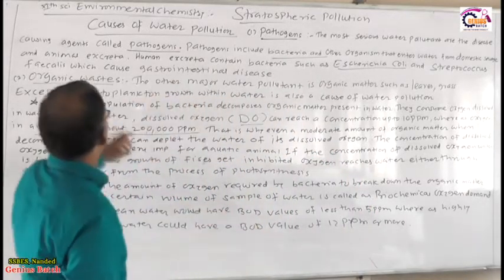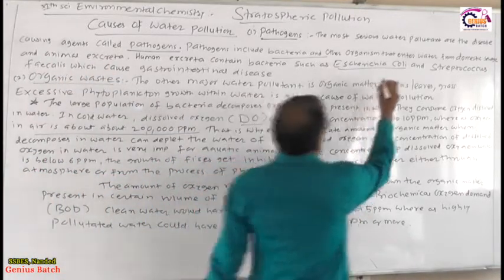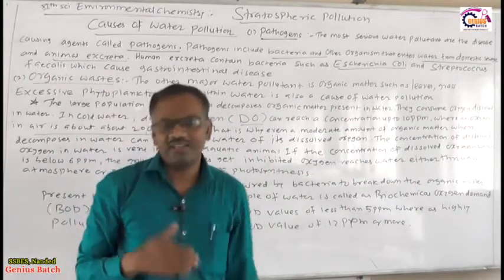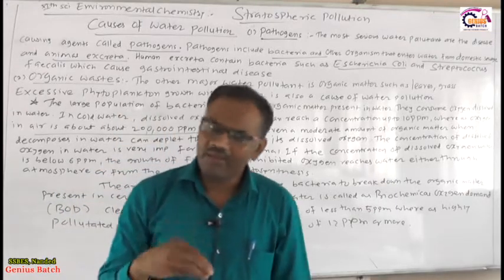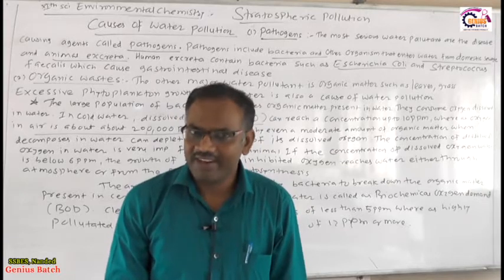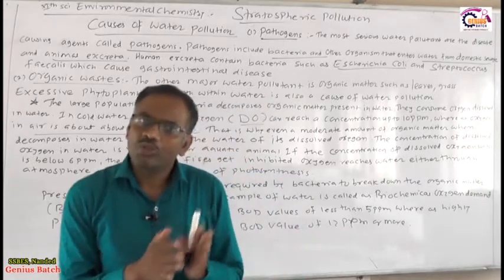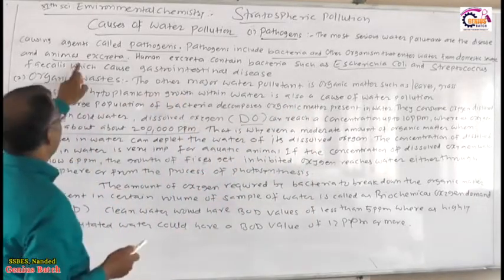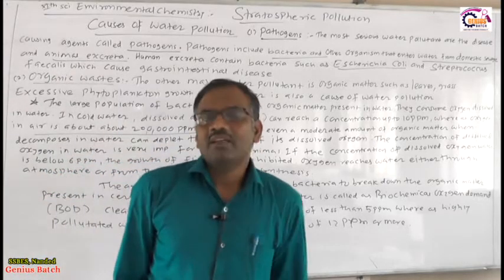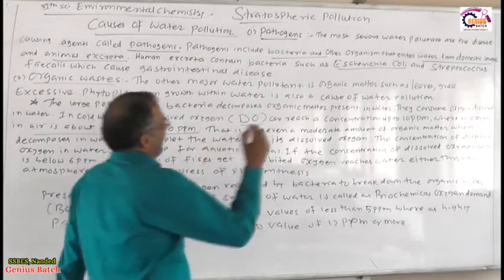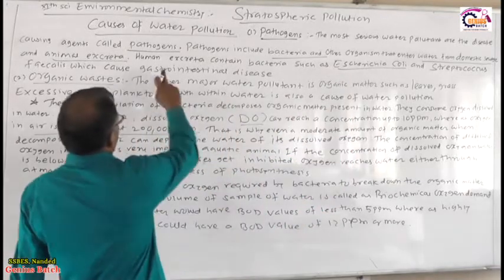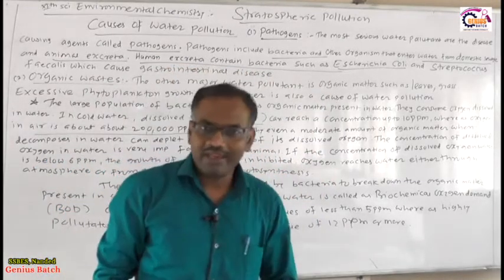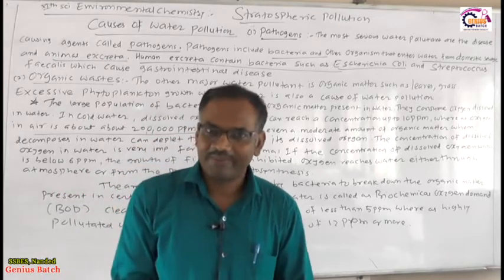The organic material that enters water from domestic sewage and animal excreta constitutes pathogens such as bacteria, fungi, and viruses. The human excreta contain bacteria such as E. coli, which pollutes the water.